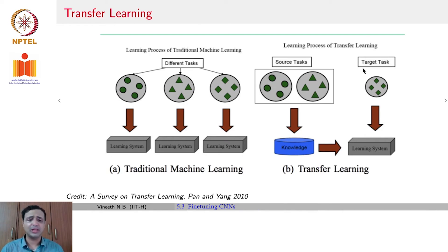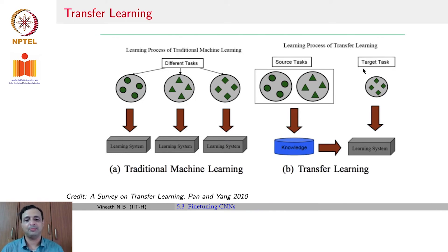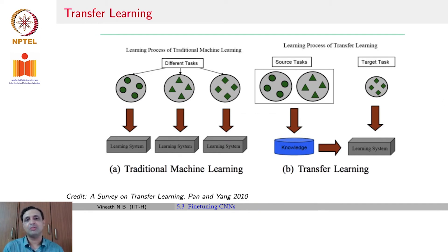For example, imagine you have trained AlexNet on the ImageNet dataset, and tomorrow you have data from a different domain — say, recognition of objects for self-driving cars in India, where objects may be different from those in ImageNet. How do you transfer the model learned on ImageNet to a new domain? In transfer learning, you use the data in the target domain as well as the model or knowledge from the source domain to learn a model for the target task.